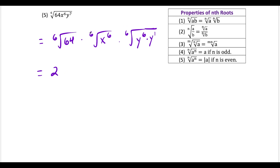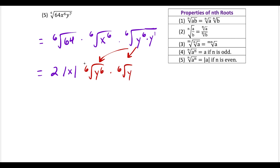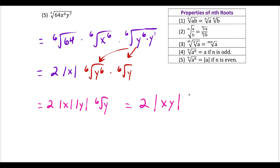The sixth root of 64 equals 2. For the sixth root of x to the sixth, we have an even index and x to an even power — that's the fifth property, so this gives absolute value of x. For the y part, I split it into the sixth root of y to the sixth times the sixth root of y. Applying property five again gives absolute value of y. Combining everything, the next line simplifies to 2 times absolute value of x, times absolute value of y, times the sixth root of y. Combining into a single absolute value, our final answer is 2 times the absolute value of x·y, times the sixth root of y.